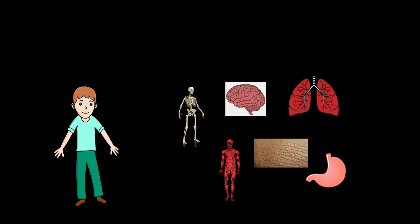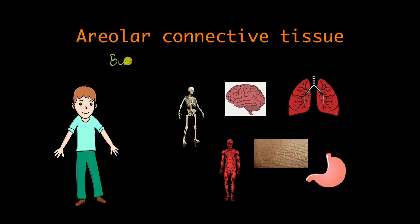It turns out that we have a specialized tissue just for this action, for holding things, binding things together in our body. And that's called the areolar connective tissue. So what does the areolar connective tissue do? It binds the different organs and tissues together.